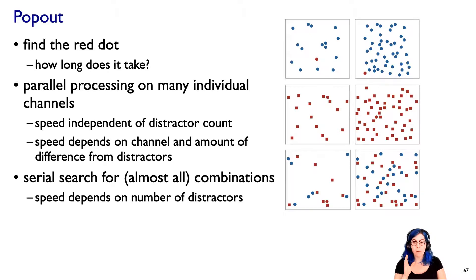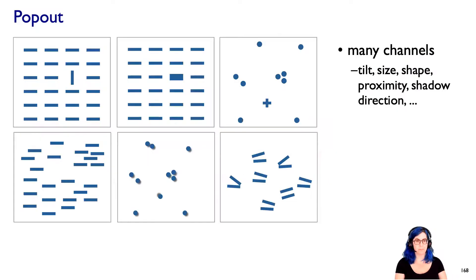And then the speed really does depend on the number of distractors. So in general, there are very few counter examples where maybe we could combine two. But for many combinations, we don't get that and for all triplets and more. And so what that means is that although it would be tempting to think we could get popout on any individual channel, once you start combining them, sometimes it's called conjunctive search, then we no longer can rely on popout.